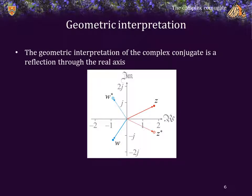The geometric interpretation of complex conjugation is simply a reflection through the real axis. Here we see two complex numbers z and w, and if you were to reflect those two numbers in the real axis, you would get their complex conjugates z star and w star.